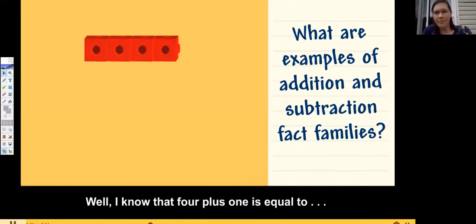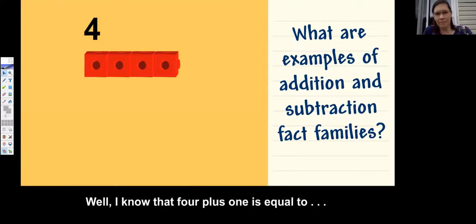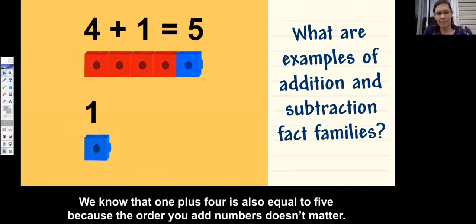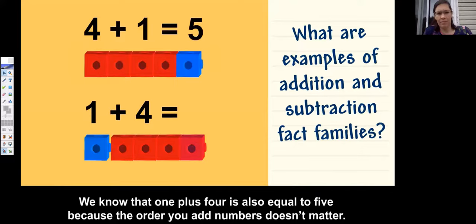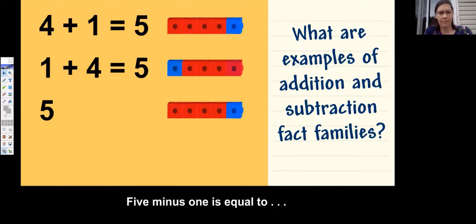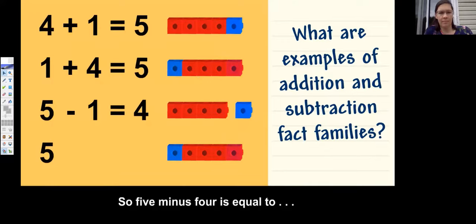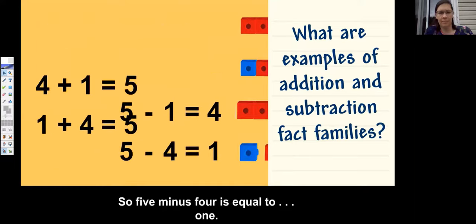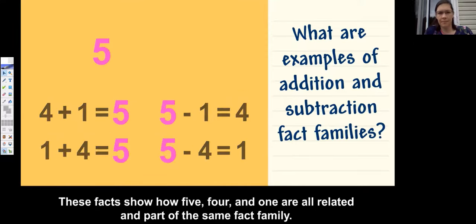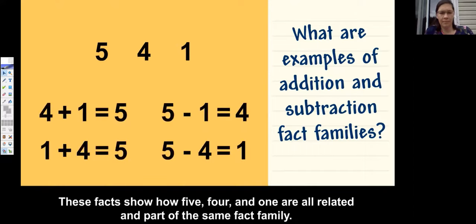I know that four plus one is equal to five. We know that one plus four is also equal to five, because the order you add numbers doesn't matter. Five minus one is equal to four. So five minus four is equal to one. These facts show how five, four, and one are all related and part of the same fact family.